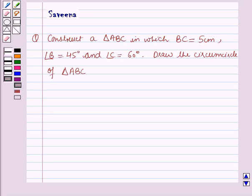Hello all and welcome to the session. Today the question is construct a triangle ABC in which BC equals 5 cm, angle B equals 45 degrees, and angle C equals 60 degrees. Draw the circumcircle of triangle ABC.